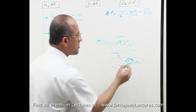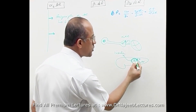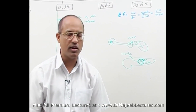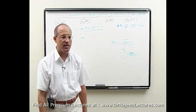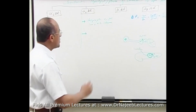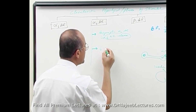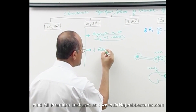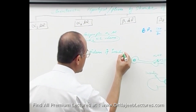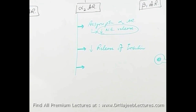Whenever these alpha 2 receptors are stimulated, they are linked with G inhibitory protein intracellularly and inhibit the function of beta cells of the pancreas, so insulin release is inhibited. They reduce the release of norepinephrine and they also reduce the release of insulin.